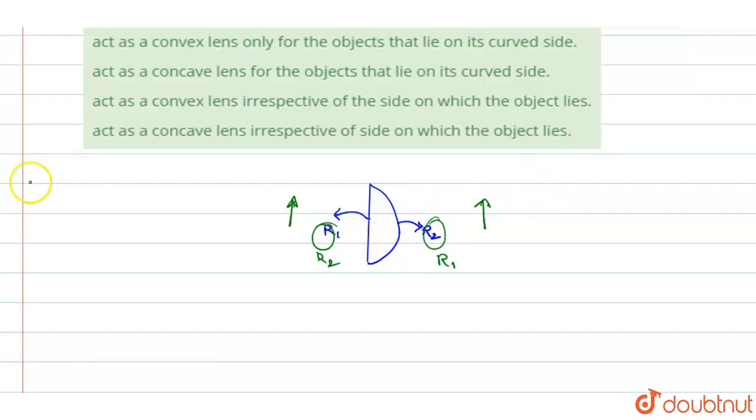We know that the radius of curvature of a plane surface equals infinity. Let us solve for both cases and verify what happens. First condition: object on the left side.